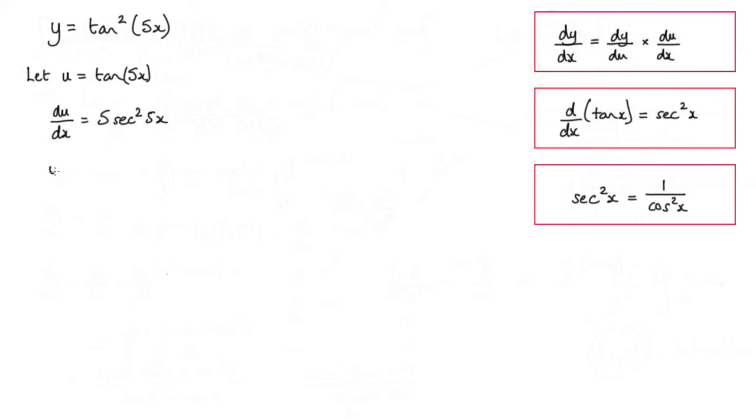So now what we have, we have that y is equal to u squared. So what I've done here, I've substituted u into here. So u is tan of 5x. And obviously it's a squared term. So dy by du is equal to 2u.